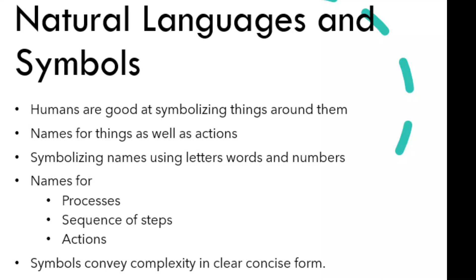The idea just doesn't stop at nouns and verbs. We have names for entire processes or sequences of steps or actions — like you must have heard of Pythagoras' theorem. It is a way of calculation involving multiple steps, but just using those two words in an instruction like "please calculate the length of a staircase leading to a window in my house" you immediately know what I am talking about and are able to perform that action. Just pause and think of the entire instruction for a second and admire the beauty of natural language in conveying such a complicated sequence of tasks in just a few words.